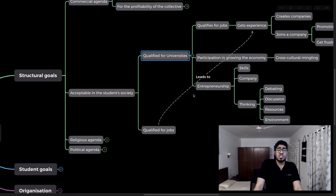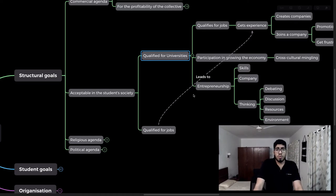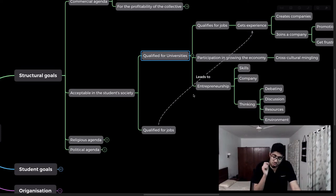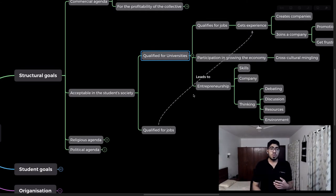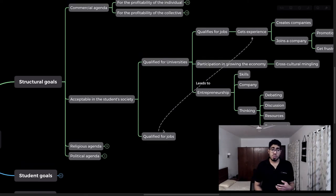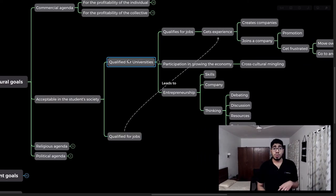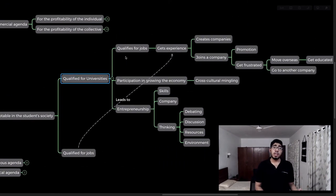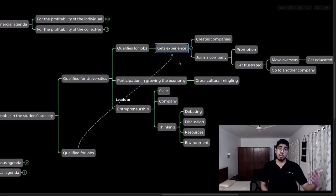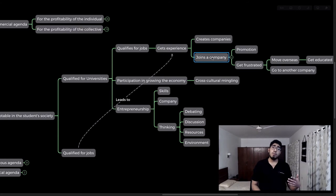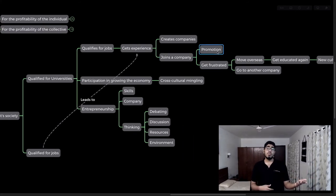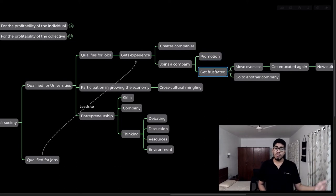Another structural goal is producing students acceptable in the student society — meaning how can schools produce people who are suitable for the workforce? Students go on to join jobs, qualify for universities, then either create companies or join other companies, getting promoted based on skills taught at school, such as professionalism and moral values.